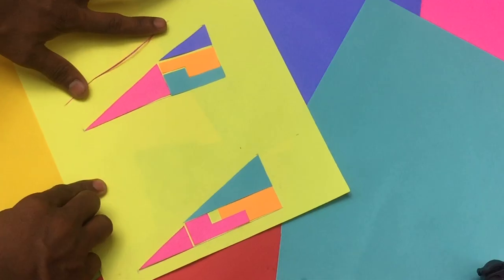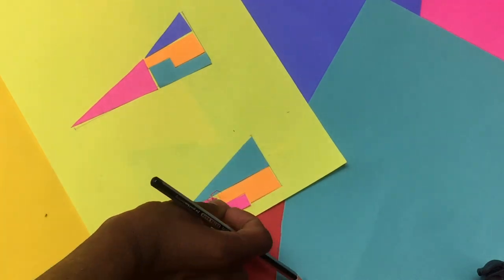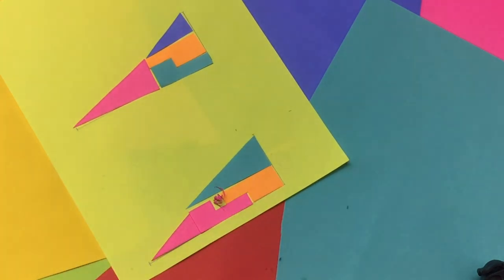If you cut that out and make it into a square and it should fit right in here in the missing part. So it will become a perfect triangle.